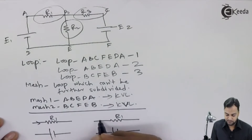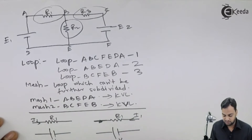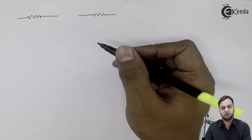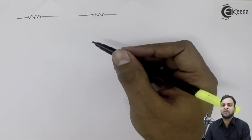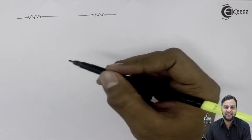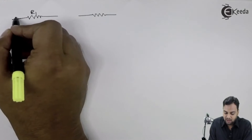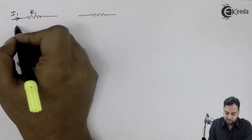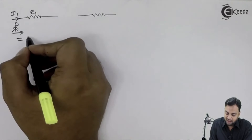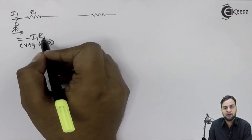This is resistance R1, and current I1 is flowing through it in this direction. This is the potential difference V1, and this is the potential difference V2. Now, if the current is flowing in one direction and you are traversing the loop in the same direction as that of the current, you will write the voltage drop as minus I1 R1. That is a voltage drop, and we give a voltage drop a negative sign.